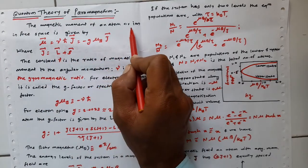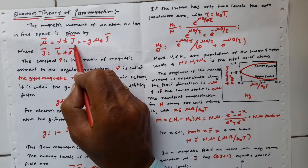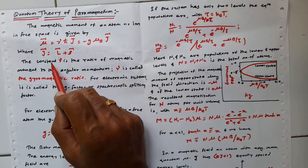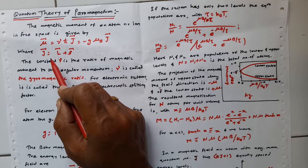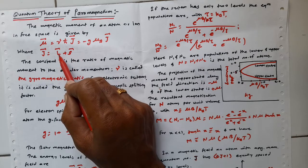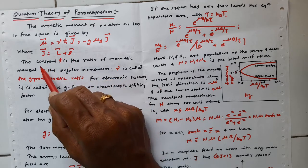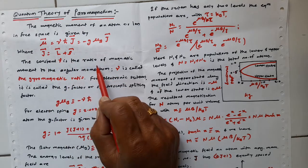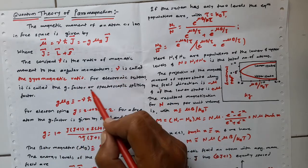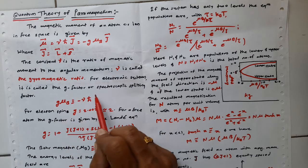The magnetic moment of an atom or ion in free space is given by μ̄ = γℏJ̄, where γℏ can be replaced with −gμ_B J̄. Here J is the total angular momentum, ℏ is the reduced Planck constant, and J̄ is the sum of orbital angular momentum and spin angular momentum. The constant γ is the ratio of magnetic moment to angular momentum, called the gyromagnetic ratio or magnetogyric ratio.